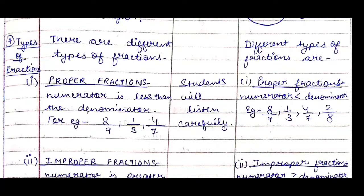Next, the teaching point is types of fractions. The first type is proper fractions — when the numerator is less than the denominator, it is a proper fraction. For example: 8/9, 1/3, 4/7. We will write on the board: proper fraction — numerator is less than the denominator, with examples.